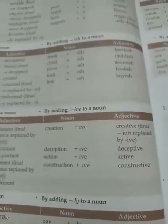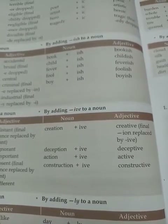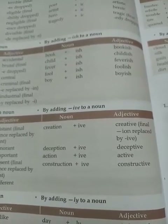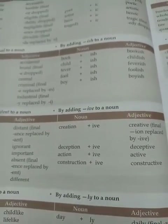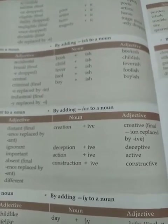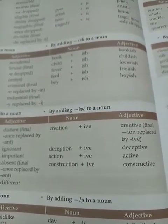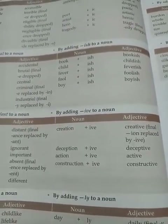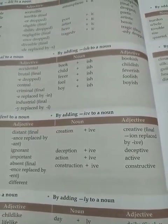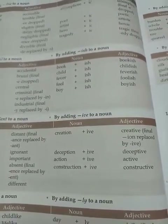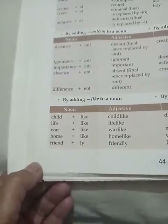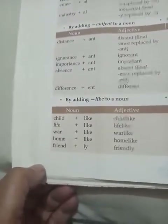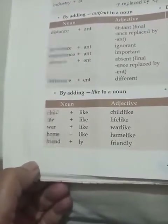By adding IVE to a noun: CREATION plus IVE becomes the adjective CREATIVE; DECEPTION plus IVE becomes the adjective DECEPTIVE.